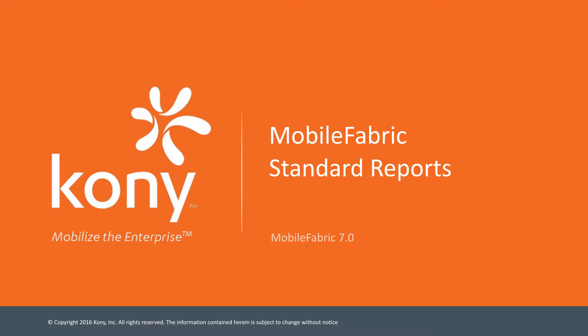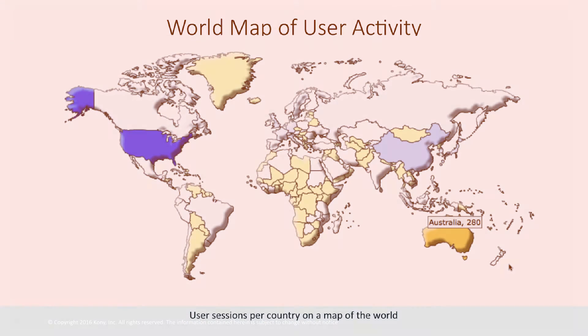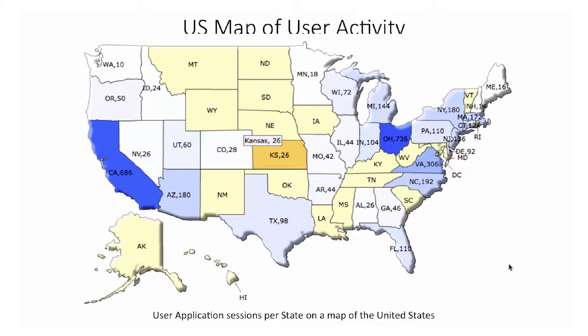From a client analytics perspective, we can see the user sessions of the application on a per-country basis on a map of the world. This way you can see which geographical locations need to be catered to and where your major hits are coming from. From a US standpoint, this geolocation-based information can also be further drilled down to a state basis, letting you see which state is using your application the most.